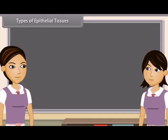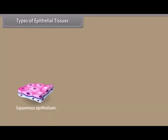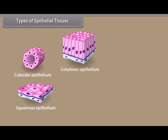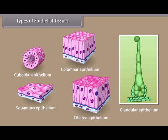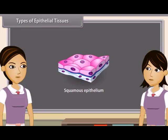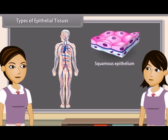Epithelial tissues are classified into five types on the basis of functions and shape of the cells. Squamous epithelium is made up of thin, flat, irregular shaped cells which fit together like floor tiles to form a compact tissue. It is found in lining of cavities and blood vessels and covering of tongue and skin. It is also known as pavement epithelium.